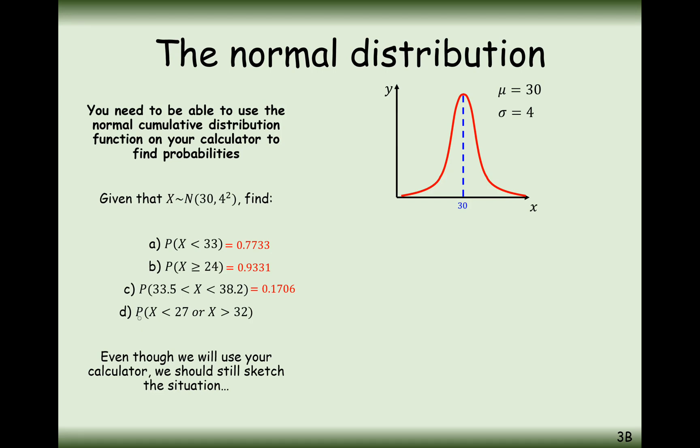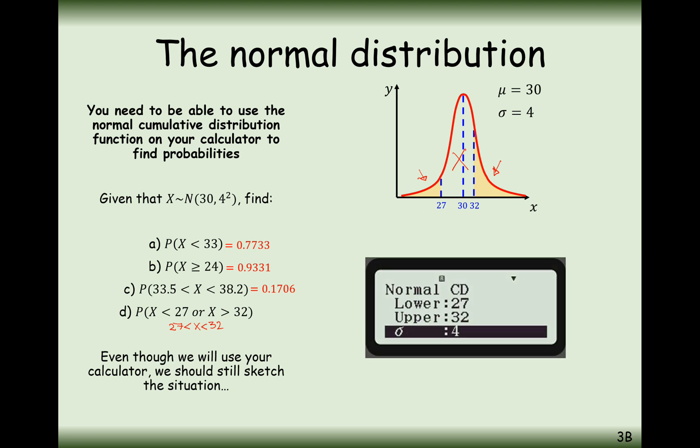For the final part D, find the probability that x is less than 27 or more than 32. What will be easier here is if we work out the probability of x being between 27 and 32, and then take away the answer from 1. That will leave us with the probability of less than 27 and more than 32, because the whole area underneath the curve equals 1.